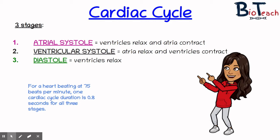The volume of blood and pressure changes in the atrium and the ventricles as they contract and relax. The pressure changes in the heart's chambers are generated by the cycle of contraction and relaxation, and they're responsible for blood movement and cause the heart valves to open and close. The valves are also there to prevent backflow of blood. For a heart that beats at around 75 beats per minute, one cardiac cycle duration is around 0.8 seconds for all three stages.